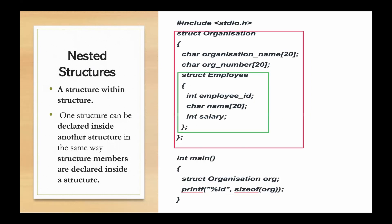For example, consider an organization. If the organization has employees, the structure can represent employee information. An employee structure can include members such as employee name, employee ID, and employee salary.